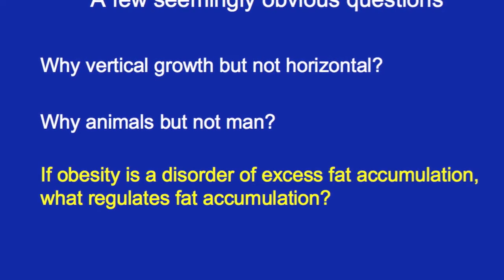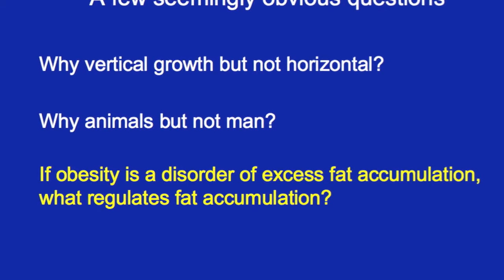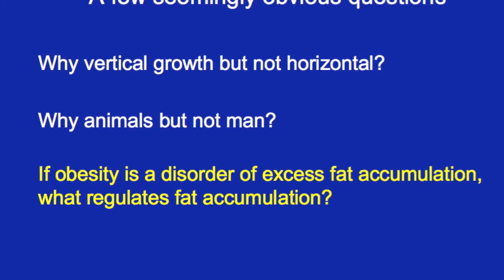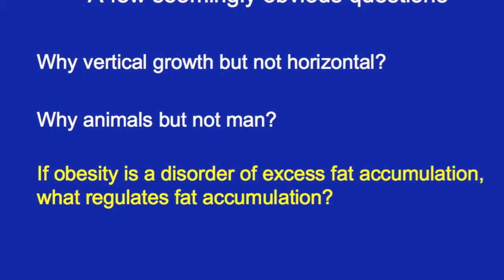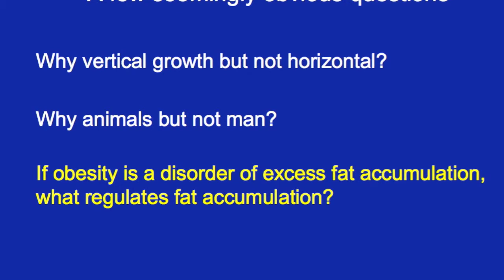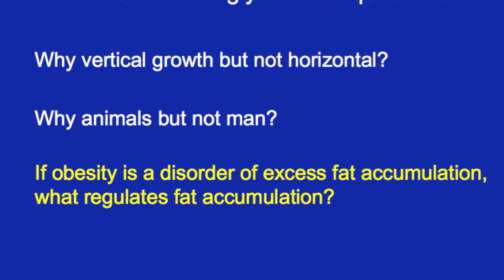These are just obvious questions. If vertical growth drives overeating, why not horizontal? In animals, I have never yet found an example — and I always ask — of an animal in which the defect actually makes it eat more. The defects inevitably cause the animal to dysregulate their fat tissue.